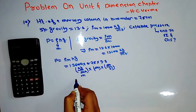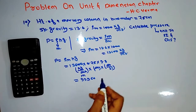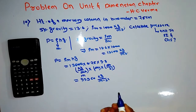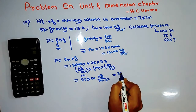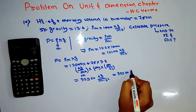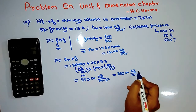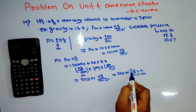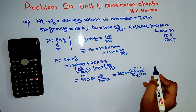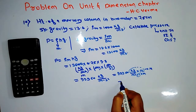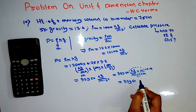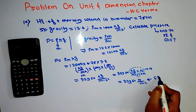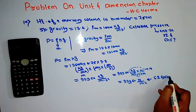The value comes out to 13600 into 0.75 into 9.8, which equals 99960 kg per meter per second square. Multiplying numerator and denominator by one meter, this becomes Newton per meter square, which is the SI unit of pressure. So the pressure is approximately 99960 Newton per meter square in the SI system.